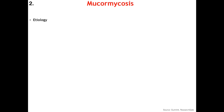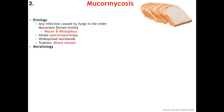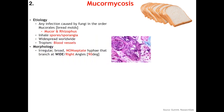Up next is mucormycosis, which is any disease caused by fungi in the order Mucorales — our bread molds. For our purposes we need to know Mucor and Rhizopus. The route of entry is through inhalation of these spores or sporangia. They are all widespread worldwide, and this one's tropism is also to the blood vessels just like Aspergillus. However on morphology you will see irregular broad non-septate hyphae that branch at wide or right angles, approximately 90 degrees.